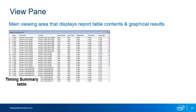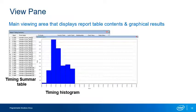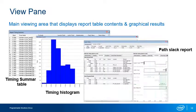Information in the report usually includes the source and destination ports or pins of the path, the launch and latch clock domains, and the calculated slack for the path. Rows colored black have positive slack and are meeting timing. Rows colored red have negative slack, indicating a timing failure. Other types of reports include timing histograms, which indicate how many paths have a certain amount of slack, and detailed path slack reports.